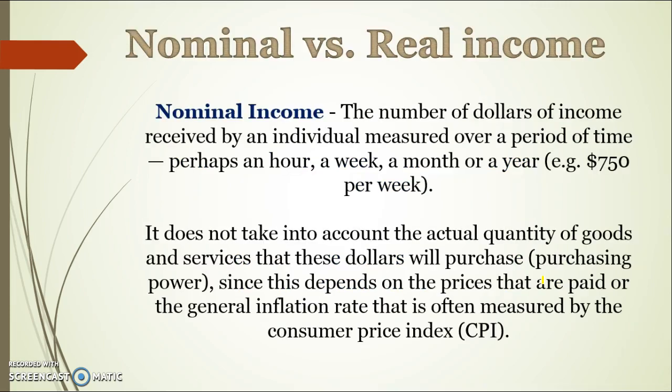Nominal income is measuring the number of dollars of income received by an individual over a period of time. Basically, if your nominal income increases, all that really means is you've got a pay rise. If you go from earning $700 per week to $750 per week, your nominal income has increased — it's just the dollar amount of income you're receiving. It does not take into account the actual quantity of goods and services that these dollars will purchase, so it doesn't take into account the rate of inflation. It's measured without looking at the CPI or inflation.